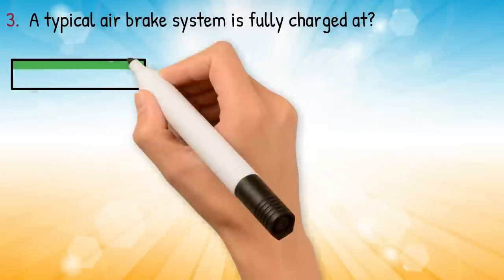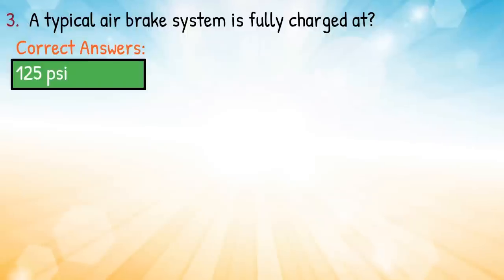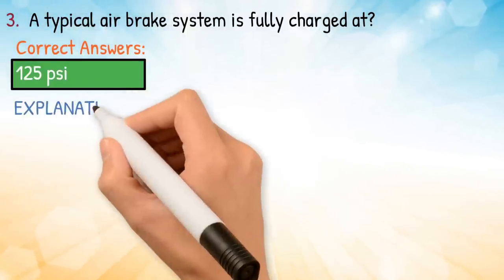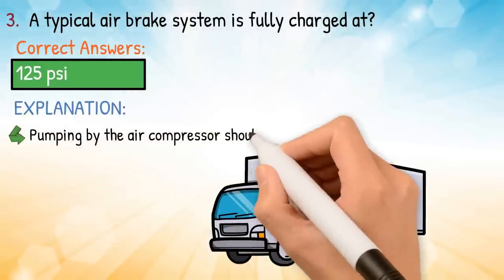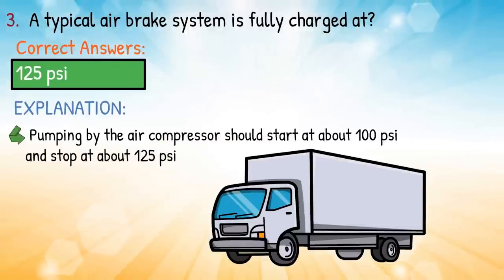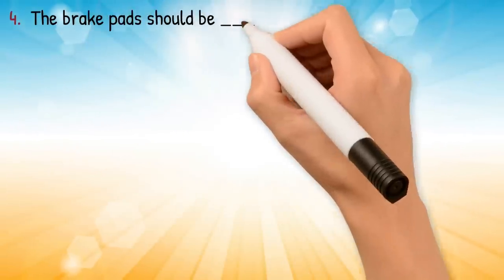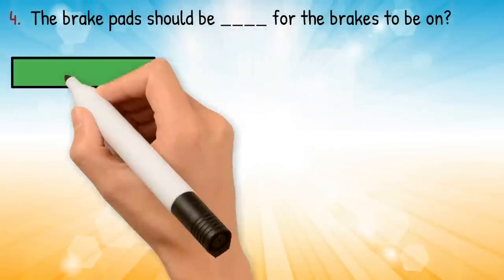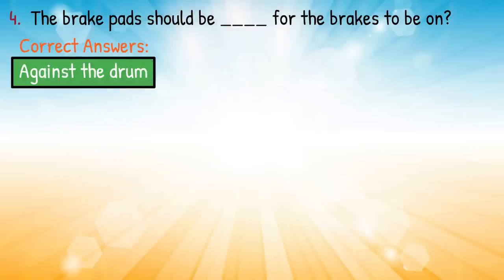Correct answer: 125 PSI. Explanation: pumping by the air compressor should start at about 100 PSI and stop at about 125 PSI. Question four: the brake pads should be blank for the brakes to be on — correct answer: against the drum. Explanation: